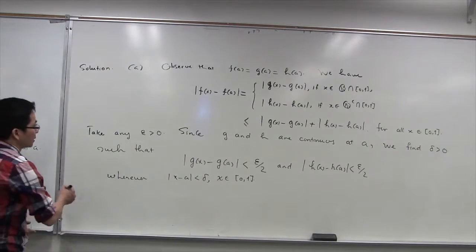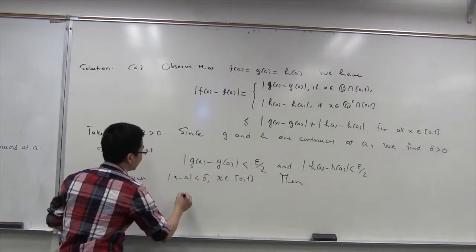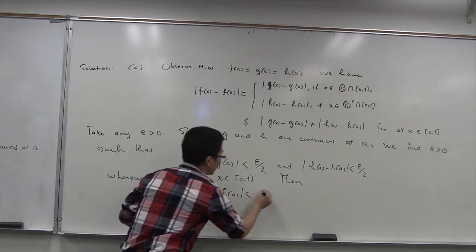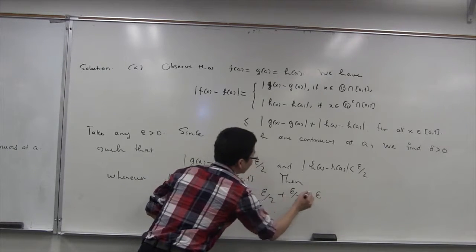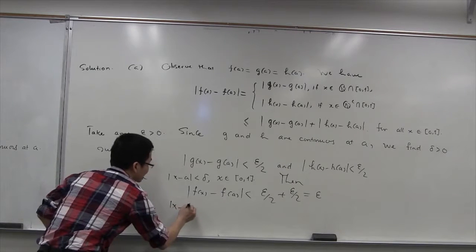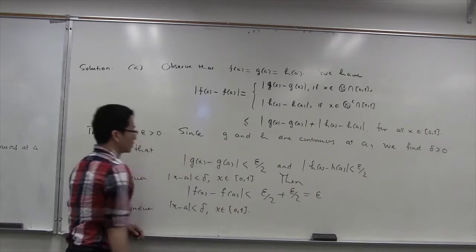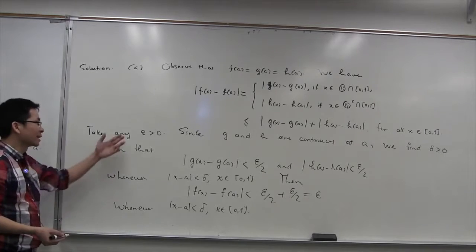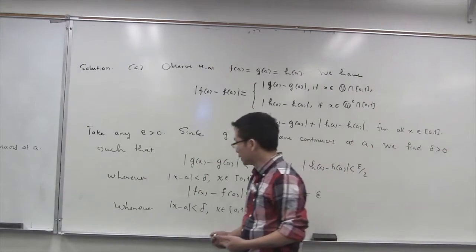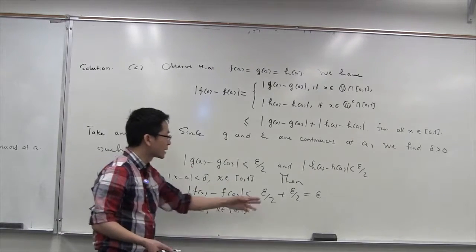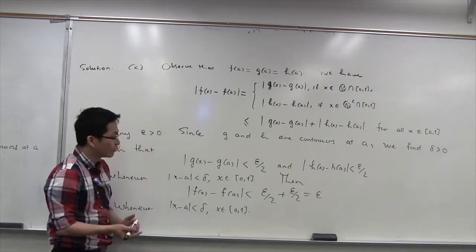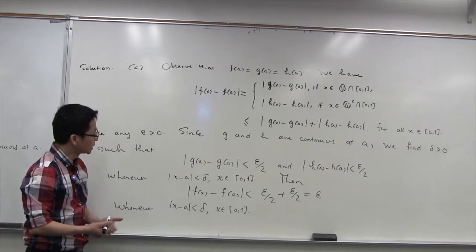Therefore, |f(x) - f(a)| is less than epsilon/2 plus epsilon/2, which equals epsilon, whenever |x - a| < delta and x is in [0,1]. To summarize: we took any epsilon > 0, found delta > 0 such that |f(x) - f(a)| < epsilon whenever |x - a| < delta and x is in [0,1]. Therefore, by the definition, the function f is continuous at a.